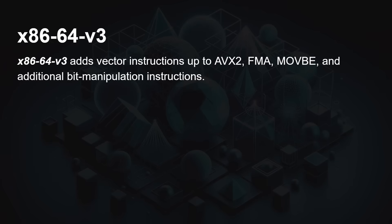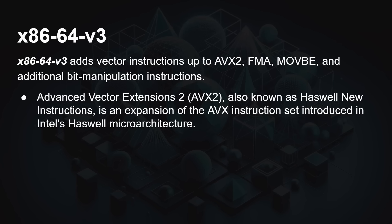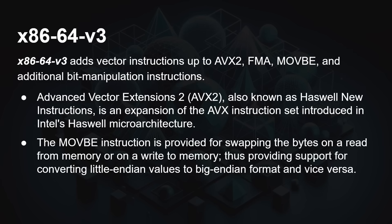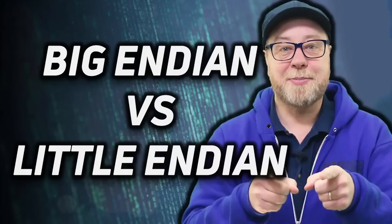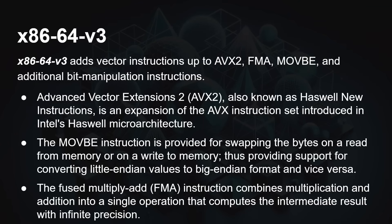So what is x86-64v3, which is what all the fuss has been about recently? It basically adds AVX2 and a couple more instructions: FMA and MoveBE, and some additional bit manipulation instructions. AVX2, also known as the Haswell instructions, is an expansion to the original AVX instruction set introduced in Intel's Haswell microarchitecture. The MoveBE instruction provides byte-swapping on reads from or writes to memory, giving fast conversion between little-endian and big-endian in hardware. The fused multiply-add instruction combines multiplication and addition into a single operation — very handy particularly for gaming, matrix operations, and neural network work.